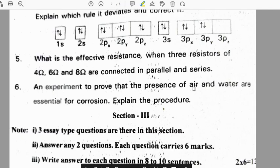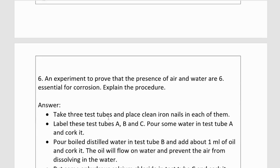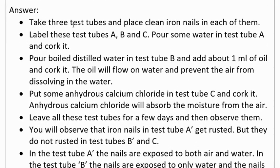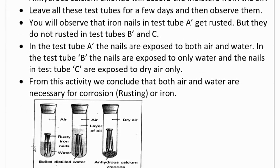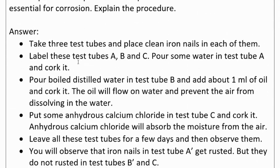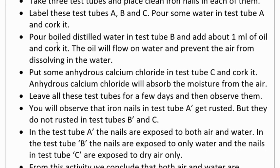An experiment to prove that the presence of air and water are essential for corrosion. Explain the procedure. Take 3 test tubes and place clean iron nails in each of them as shown in the picture. Label these test tubes as A, B, C. Pour some water in test tube A and cork it.